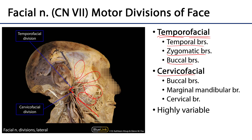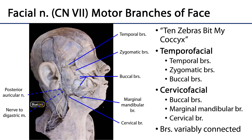These branches are very conceptual and highly variable, so you shouldn't expect every individual to have the same branching pattern or even to have these large divisions. There's quite a bit of variation amongst people. But for the most part, look to where these branches are heading and name the branches by what region they're going to.